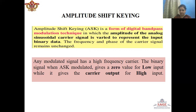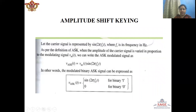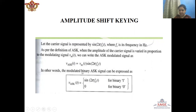Any modulated signal has a high frequency carrier. The binary signal when ASK modulated gives a zero value for low input, whereas it gives the carrier output for high input. Say we have a carrier signal represented by sin(2πF_c t), where F_c is the carrier frequency in Hz. According to the definition of the ASK modulated signal, we have V_m(t) sin(2πF_c t), where V_m(t) is the message signal. When the message signal is high, that is 1, the ASK modulated signal is represented by sin(2πF_c t), which is a sinusoid of frequency F_c. Whereas when the message signal is zero, the ASK signal will be zero — there will be a zero level when the message bit is zero.